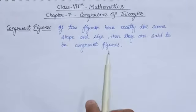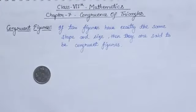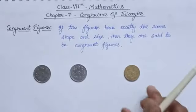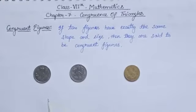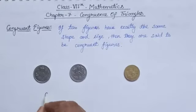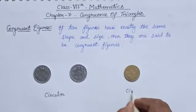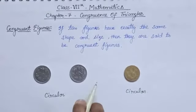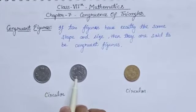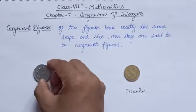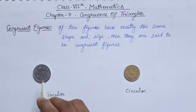Let us understand it with the help of some coins. Here you can see that we have two 2-rupee coins and one 5-rupee coin. If we talk about the shape of these coins, then you can see that all three coins have the same shape, that is circular. The shape of this 5-rupee coin is also circular. But what about the size? If we ask about the size of these two 2-rupee coins, then you can see that these two 2-rupee coins have the same size. Because when you place one coin over the other 2-rupee coin, these two 2-rupee coins cover each other exactly.